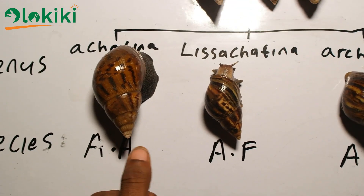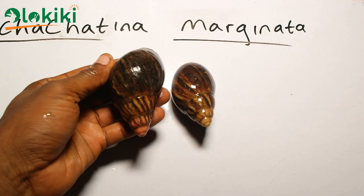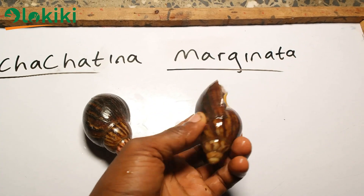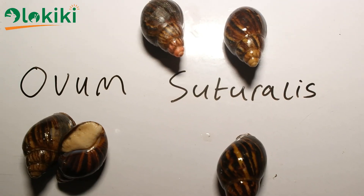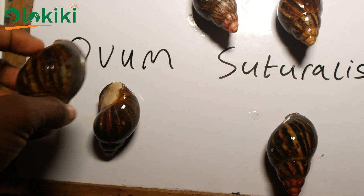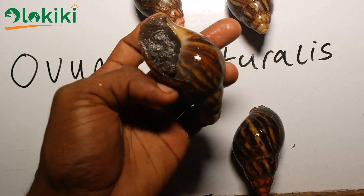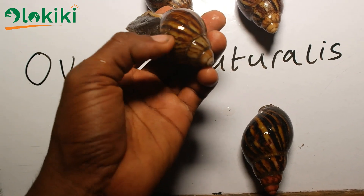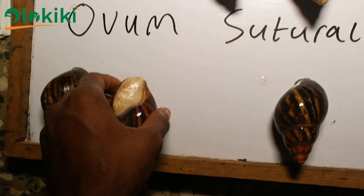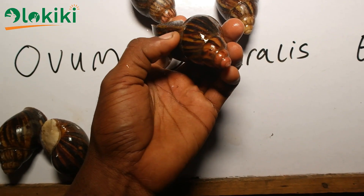Moving on to the next species, we have the Achatina marginata. They are native to Nigeria and commercially found there. One of their distinctive features is the tip of their shell, which is broader when compared to other species. There are various varieties under this species. Looking at the variety ovum, its distinctive features are a white or yellow columella and a white shell tip. This variety also has an albino strain, so sometimes you can have the ovum variety that is also albino on your farm. The suturalis variety has a pink tip and a pink columella.